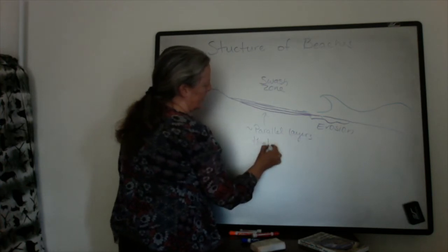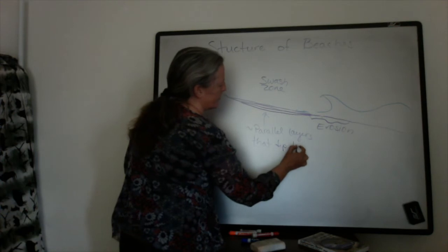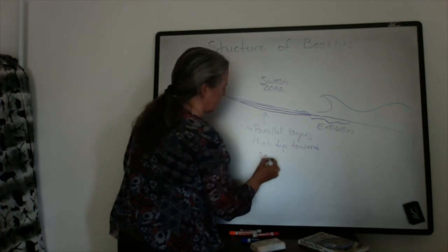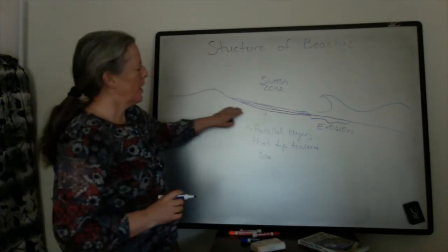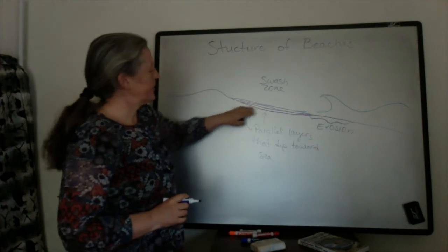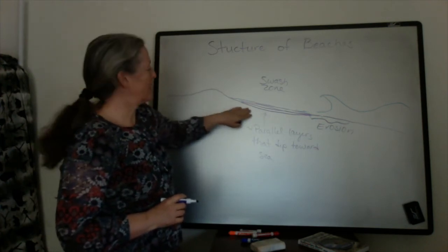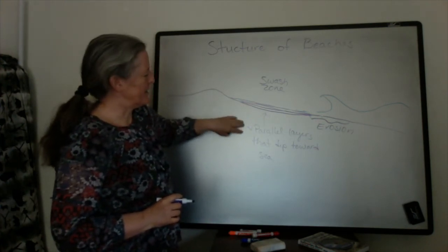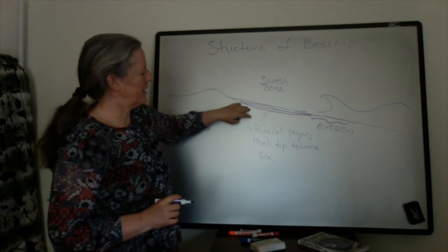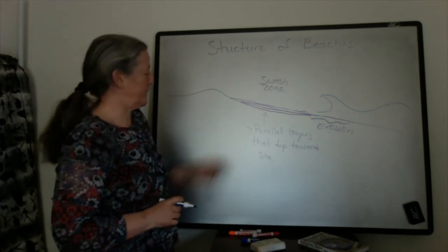They dip towards the ocean. As the waves change, it erodes the beaches, deposits on them, but these parallel layers that dip towards the ocean are really common for beaches.